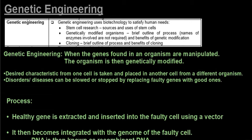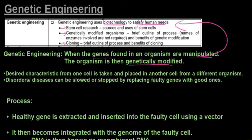In this video we'll be looking at genetic engineering, and under that: stem cell research, genetically modified organisms, and cloning. Genetic engineering is when we use biotechnology to satisfy our human needs. The genes found in an organism are manipulated, making that organism genetically modified. This is done by taking the desired characteristic from one cell and placing it in another cell from another organism, so multiple organisms can be involved.